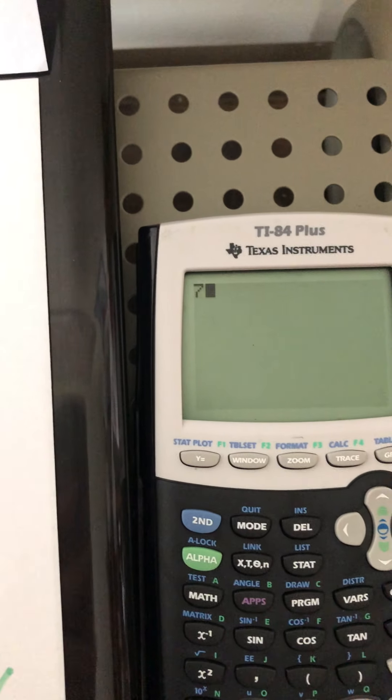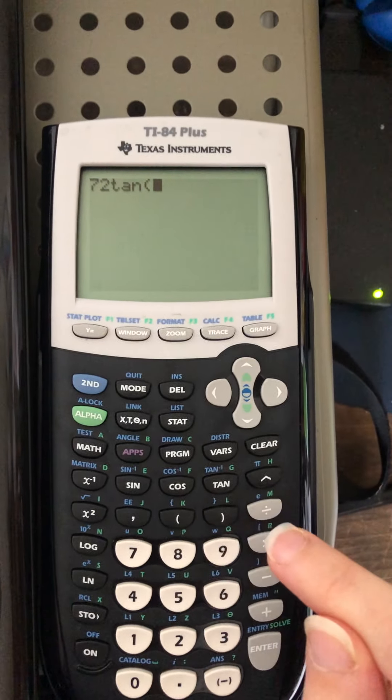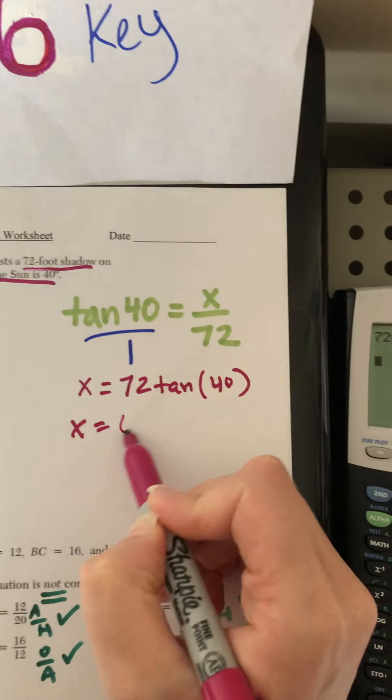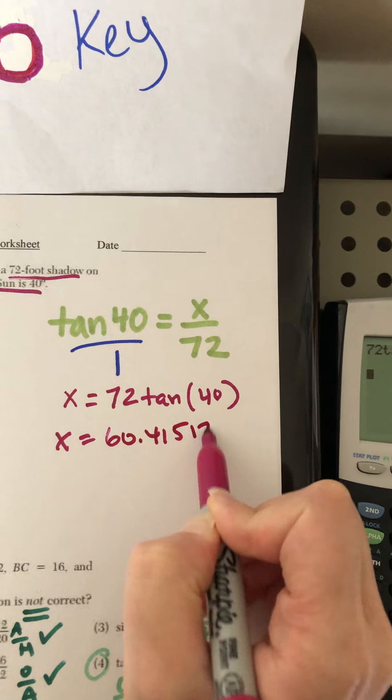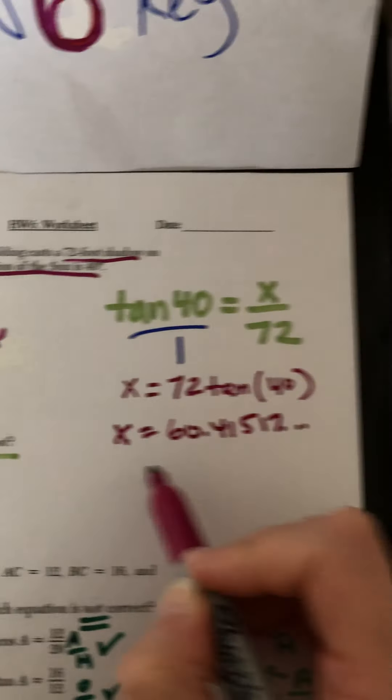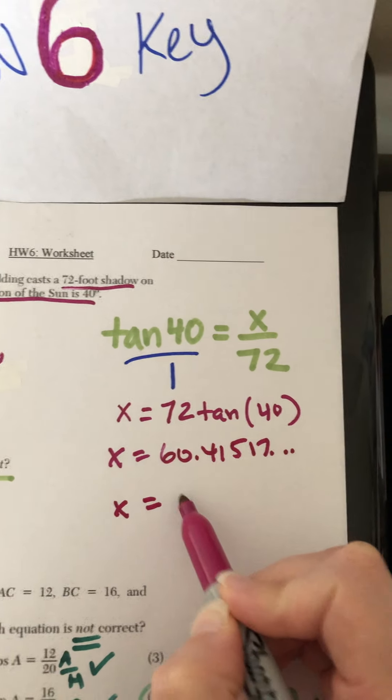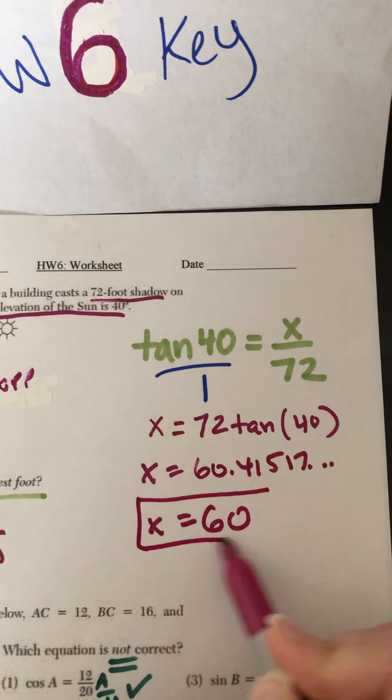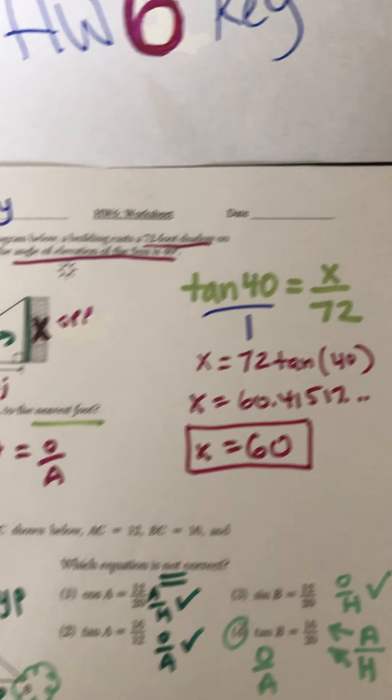And now 72 tan 40, close parentheses. 60.41517 dot dot dot. And they want it to the nearest foot. Nearest foot means whole number. That's 60. Take a look at your answer. No answer choices. So that's the answer. Okay, x is 60.